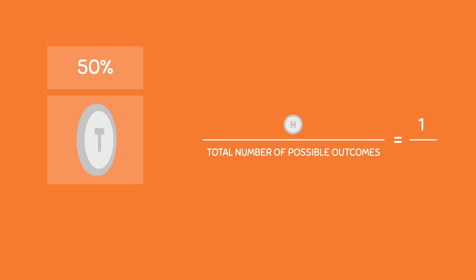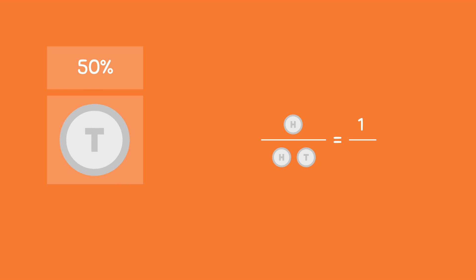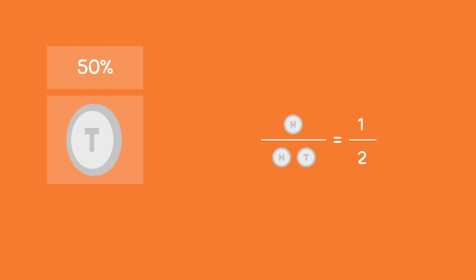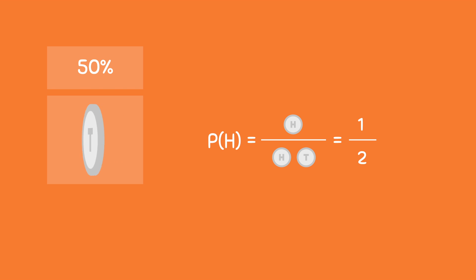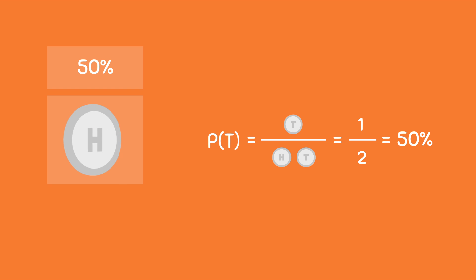Now when you flip a coin, there are 2 possible outcomes — you can get either heads or tails — therefore there are a total of 2 possible outcomes. As a result, the probability of getting heads is 1 divided by 2, which is equal to 0.5 or 50%. Conversely, the probability of getting tails would also be equal to 0.5.